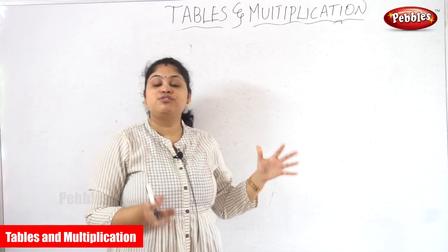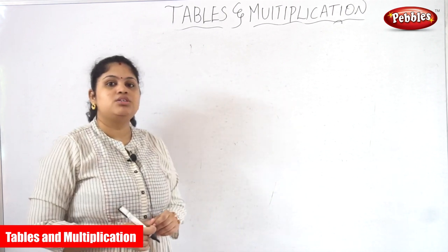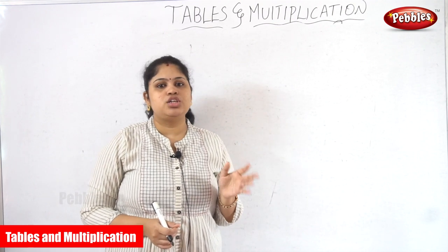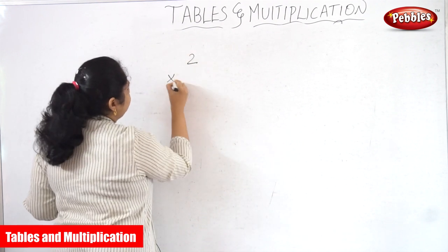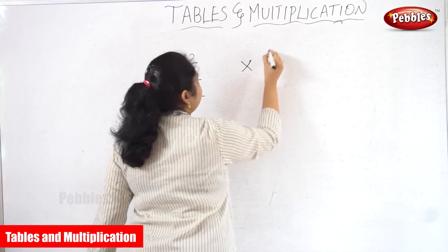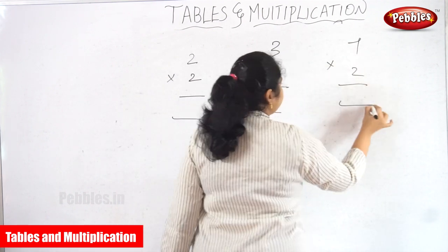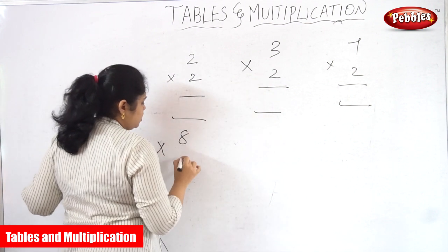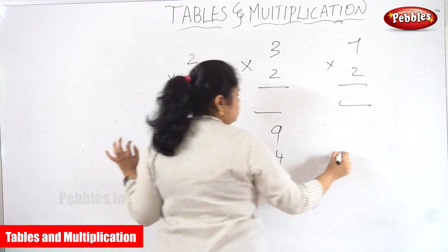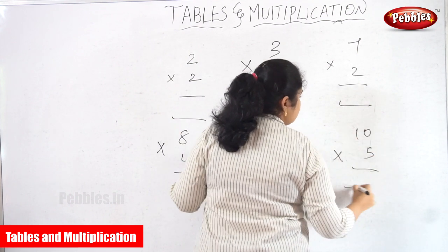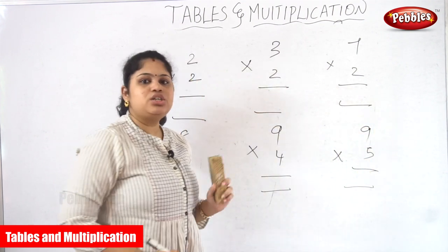Now we are going to fully see how multiplication works. We are going to start with single digit multiplication — meaning only one digit numbers. For example: 2 into 2, 3 into 2, 7 into 2, 8 into 4, 9 into 4. Note that 10 into 5 is not single digit. This is single digit multiplication.